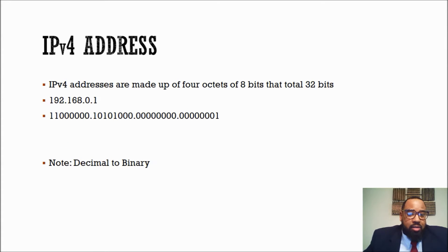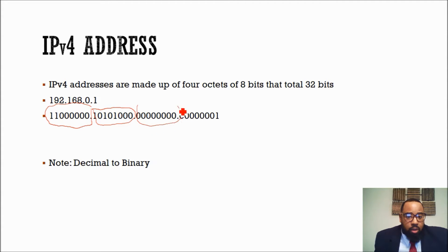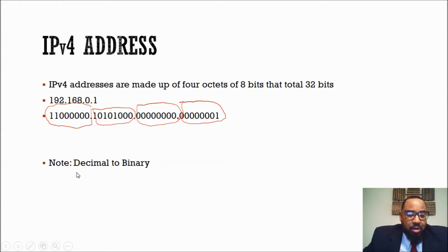Now, IPv4 addresses are made up of four octets of eight bits, totaling 32 bits. So when you look at 192.168.0.1, you essentially have one octet here, one octet here, one octet here, and one octet here — separated by the decimal. What you're looking at are the ones and zeros that represent 192.168.0.1, because computers actually communicate in ones and zeros. They're simple; we're complicated.